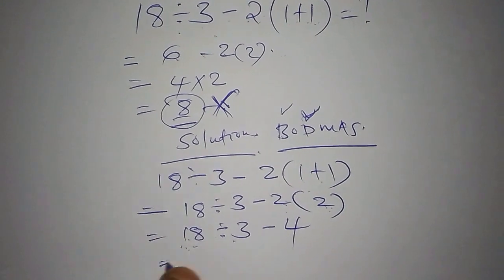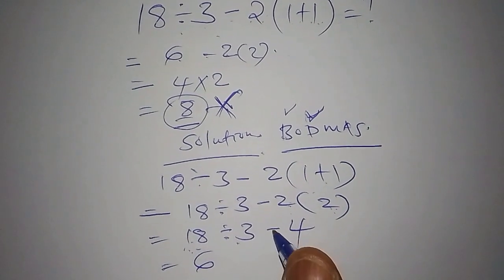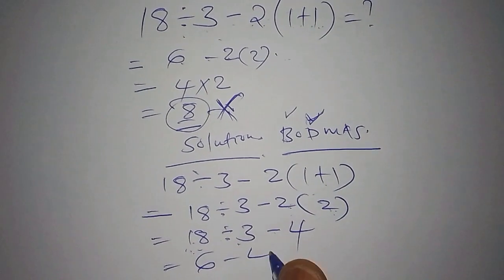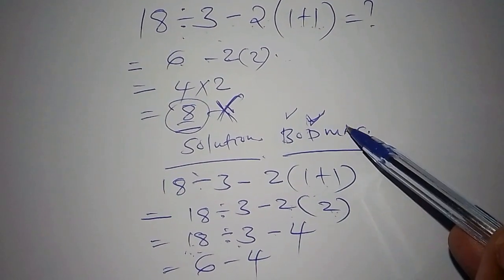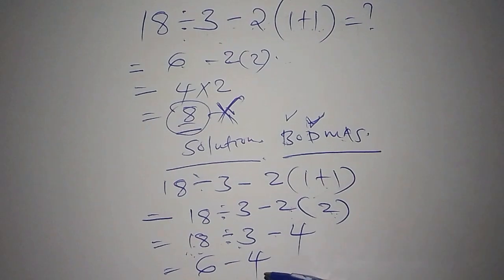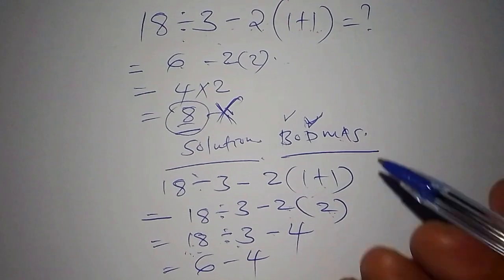So we shall have our 6 there, subtract from 4. So now when we check our BODMAS, the subtraction becomes the last alternative.